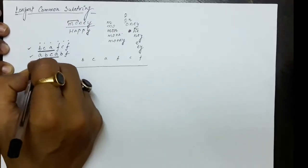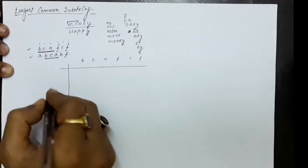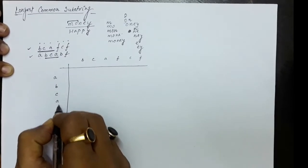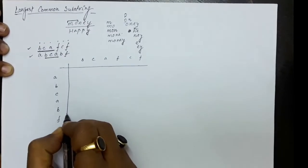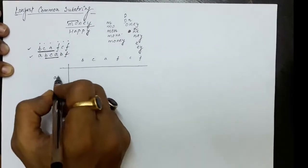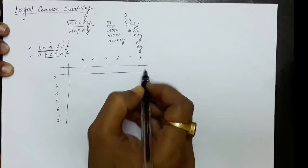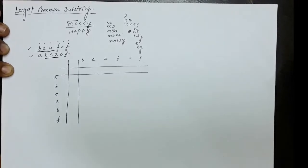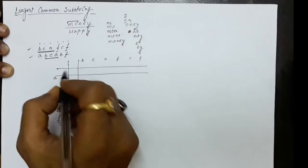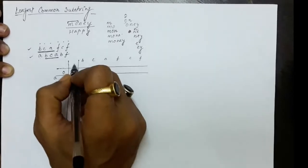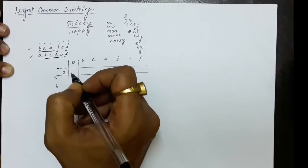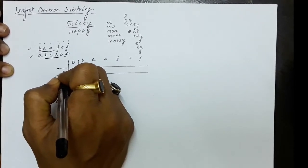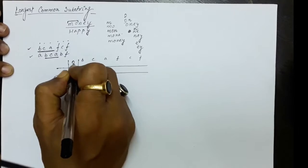On the row side we take the second string A, B, C, A, B, F — again 6 characters. In most dynamic programming solutions we have discussed, we also make use of an extra row and extra column. So row number 0 is the extra row and column number 0 is the extra column.